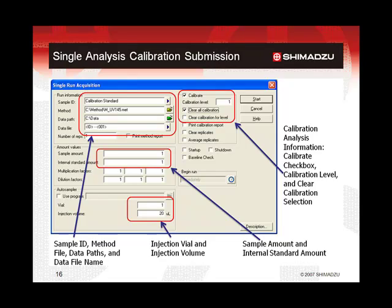Selecting 'clear all calibration' will clear out any calibration data that may have already been in the method, allowing the data to be automatically re-entered as the standard samples are analyzed. 'Clear all calibration' should only be selected for the first standard of a calibration set; otherwise, the calibration will only contain data for the most recently analyzed standard. The 'clear calibration for level' option can be selected for all standards as it replaces pre-existing calibration data one level at a time after each level has been analyzed. In this way, the method is never completely cleared of the calibration data.